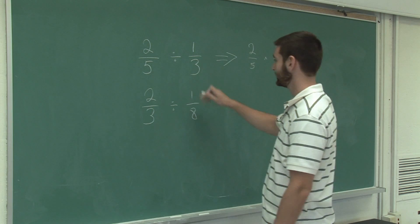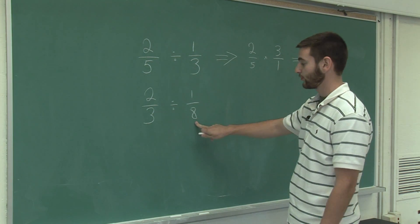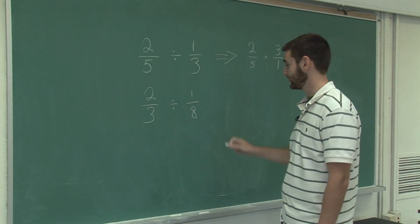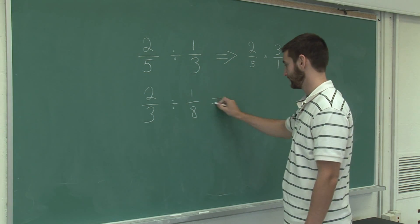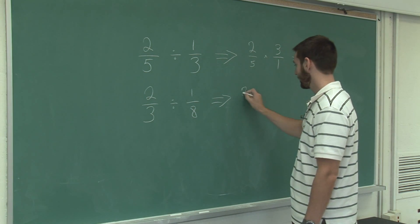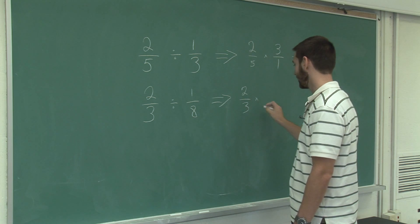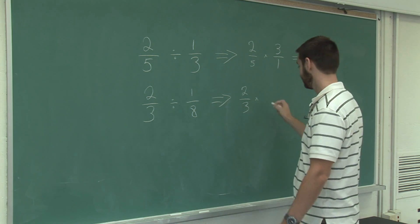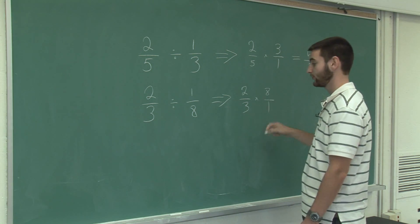Just like in the previous example, the second fraction, we're going to invert and then change the operation to multiplication. So this statement is equivalent to two-thirds multiplied by the inverse of one-eighth, which is eight over one. We just flip it.